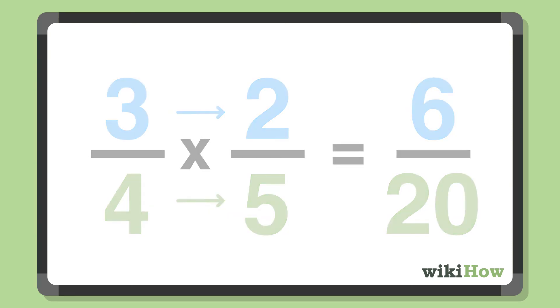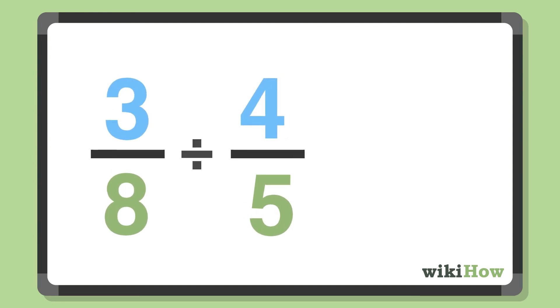To divide one fraction by another, flip the second fraction over to find its reciprocal, then multiply the two fractions together.